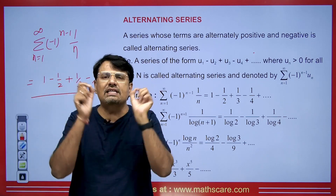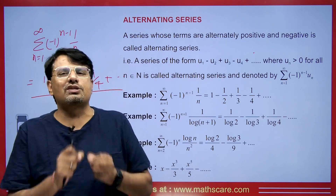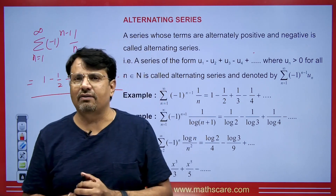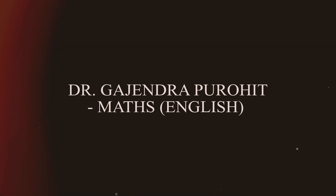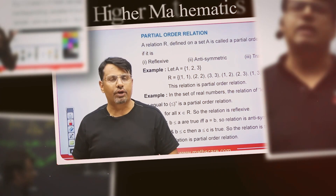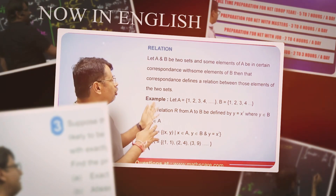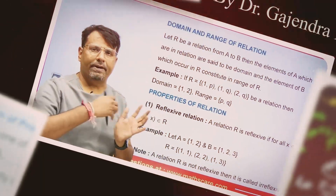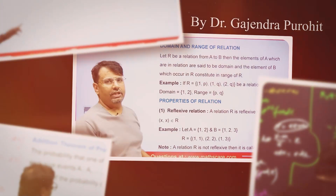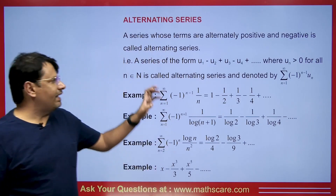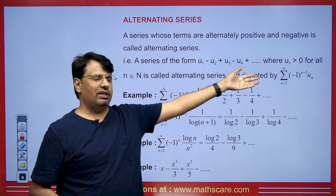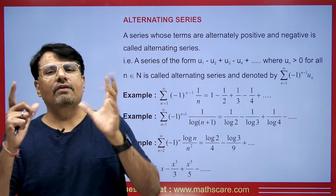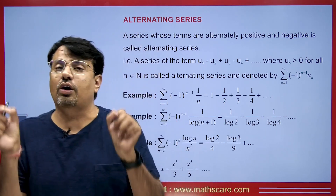Now regarding the convergence of this type of series, what specific conditions need to be satisfied for it to converge, or under what conditions does it diverge? We have a test for this known as the Leibniz test. If the conditions of the Leibniz test are satisfied, then the alternating infinite series will be considered as convergent.